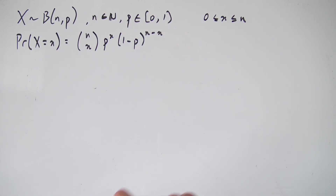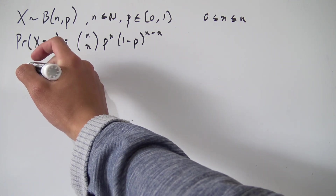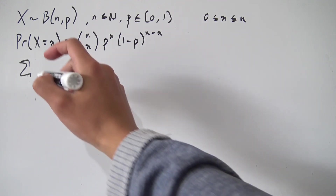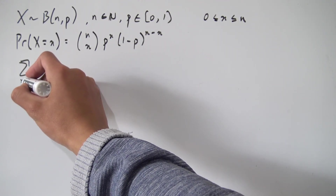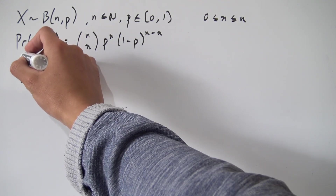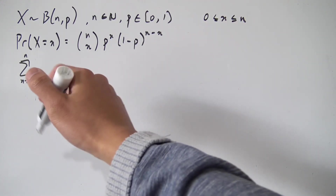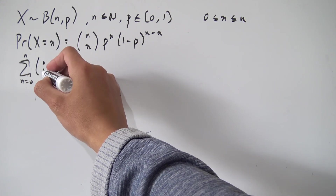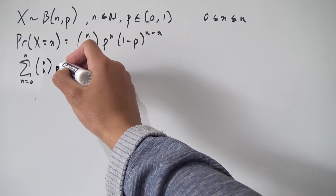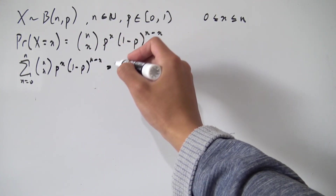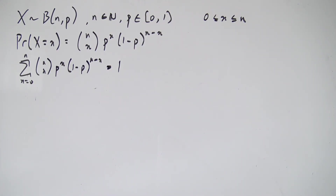One more quick thing we need to know: if we sum up all the probabilities from X equals 0 all the way up to N — the full domain of X — so we sum N choose X times P to the X times 1 minus P to the N minus X, it's going to give us 1, because we're summing up all the probabilities.